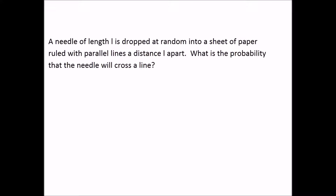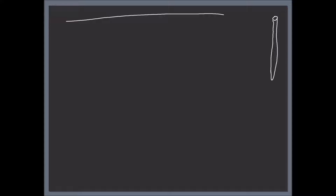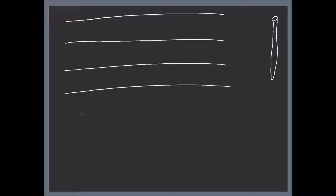A needle of length L is dropped at random onto a sheet of paper ruled with parallel lines at a distance L apart. What is the probability that the needle will cross a line? Let's look at this question. Let's assume for a second that the needle has an 'I' end over here, and let's draw some lines — this is the sheet of paper, this is the needle.